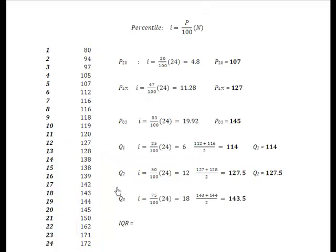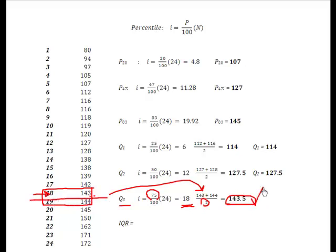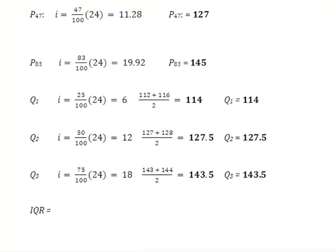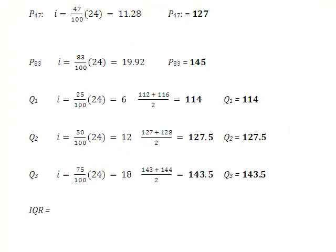So let's find Q3. Remember that Q3 is the same thing as 3 quarters. 3 quarters is the same thing as 75 pennies. So 75 divided by 100 gives me 0.75. 0.75 times 24 gives me 18. Well, again, I've got a whole number. So I'm going to come over here and find the 18th position. And I know that I've got to go in between the two because it's an even number. So I'm going to take 143 and 144, bring them over here, divide them by 2, and I now know that Q3 is located right in between these two. And it appears at 143.5. So now I've located the 20th, 47th, and 83rd percentile. I now have Q1, Q2, and Q3.